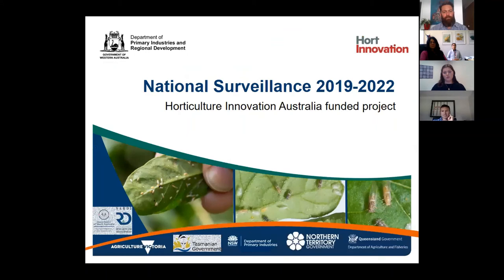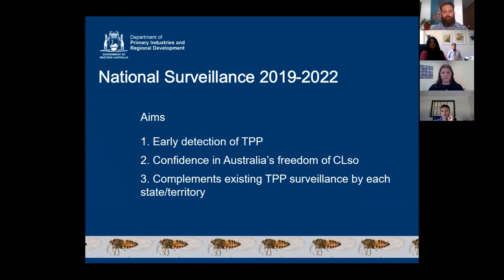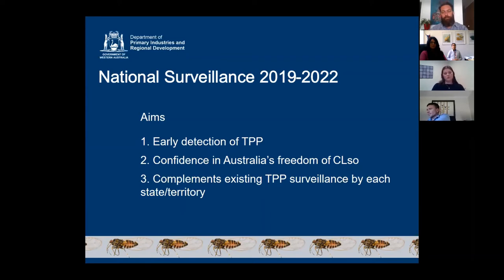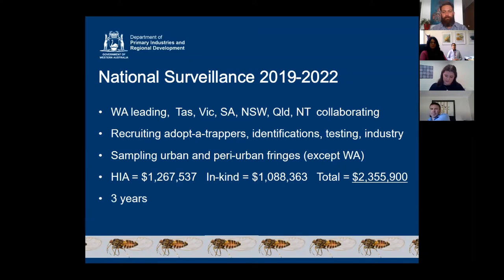Moving on to the National TPP Surveillance Project. The aims of this project are the early detection of TPP in Australia in areas where we currently don't have TPP, to give confidence in Australia's freedom from CLSO, and to complement — not replace — existing TPP surveillance in each state and territory.